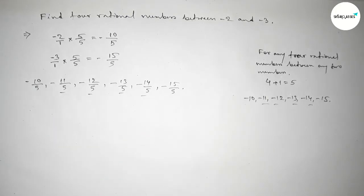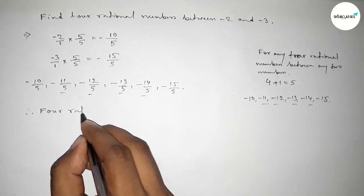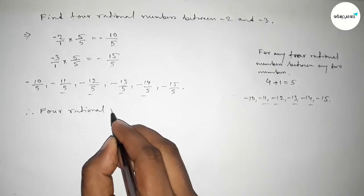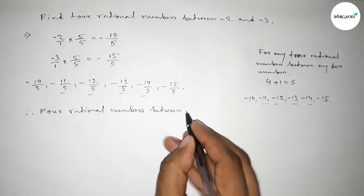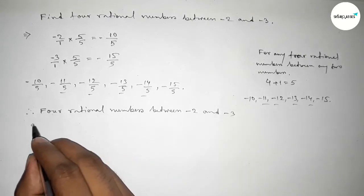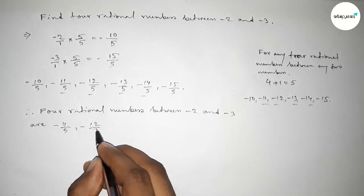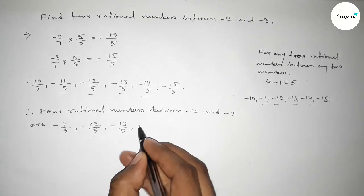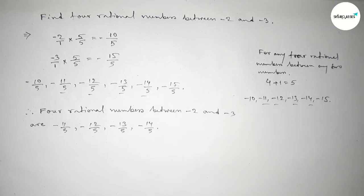Therefore, the four required rational numbers are: first one minus 11 over 5, minus 12 over 5, minus 13 over 5, minus 14 over 5. So these are the required four rational numbers.